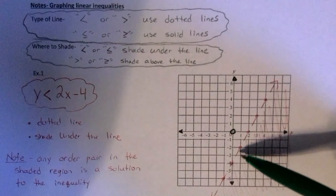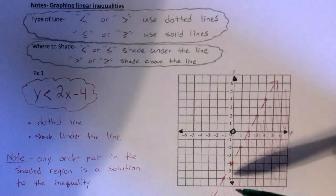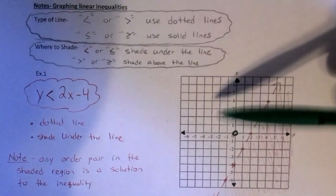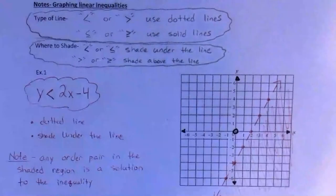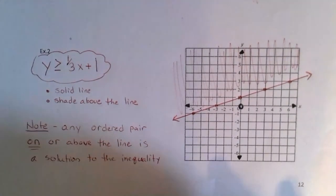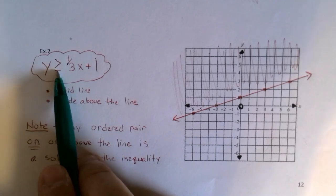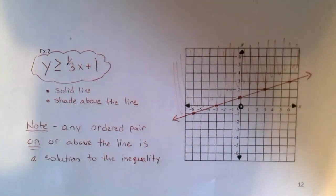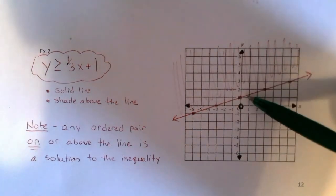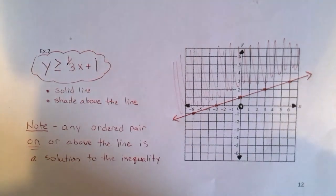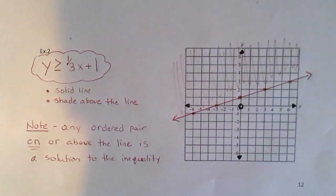You graph the line exactly the same way, then ask: solid or dotted line, and shade above or below? It makes sense — if it's less than, you shade all y values less than the line, meaning below it. If it's greater than or greater than or equal to, shade above. Example 2 shows y is greater than or equal to one-third x plus 1: solid line, shade above, and any point in the shaded region or on the line makes the inequality true.